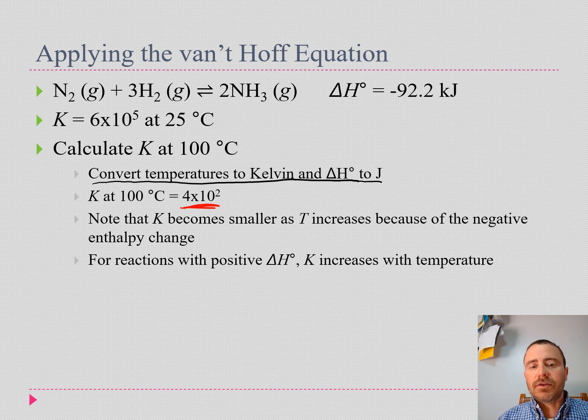In this case, our temperature decreased our value for our equilibrium constant—became smaller because this is a negative delta H. If we had a positive delta H, our K would increase with temperature.